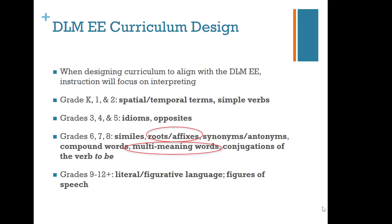The categories of vocabulary words range in complexity and progress across grade levels. Kindergarten through second grade covers spatial and temporal terms and simple verbs. Grades 3–5 cover idioms and opposites. Grades 6–8 include similes, roots and affixes, synonyms, antonyms, compound words, multiple meaning words, and conjunctions of the verb to be. Grades 9–12 cover literal and figurative language including figures of speech.